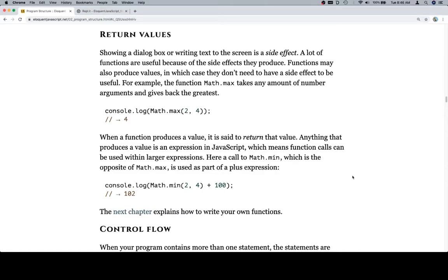Hey everybody, welcome on back. Let's talk about return values. Showing a dialog box or writing text to the screen is a side effect. A lot of functions are useful because of the side effects they produce. Functions may also produce values, in which case they don't need to have a side effect to be useful.